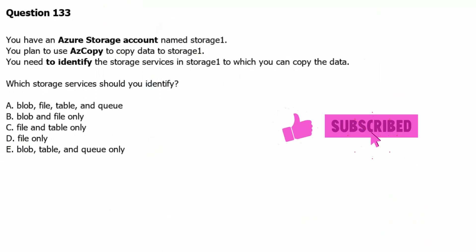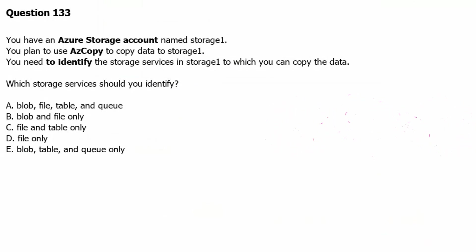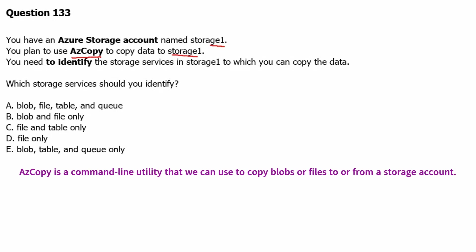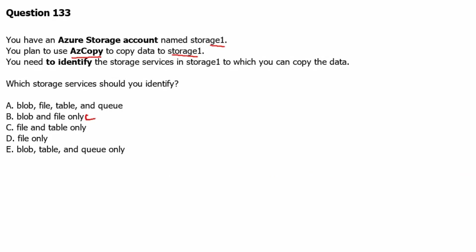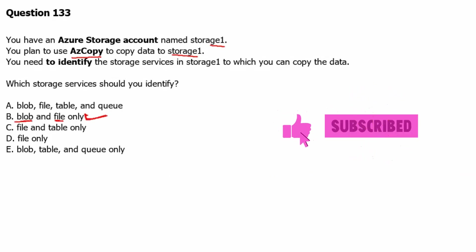Question 133. You have an Azure storage account named storage1. You plan to use AzCopy to copy data to storage1. You need to identify the storage services in storage1 to which you can copy the data. As we know, AzCopy is a command line utility that we can use to copy blobs or files to or from a storage account. Therefore, option B is the correct answer.